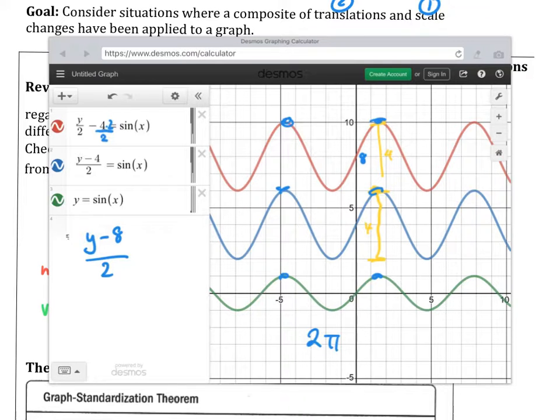So the moral of the story is this form is the most helpful because this form right here tells me exactly what I see. And it also tells me a particular order. The order being number one, we do a scale change. And then number two, I do my translation. And that will be the focus of what we're covering today in this lesson.